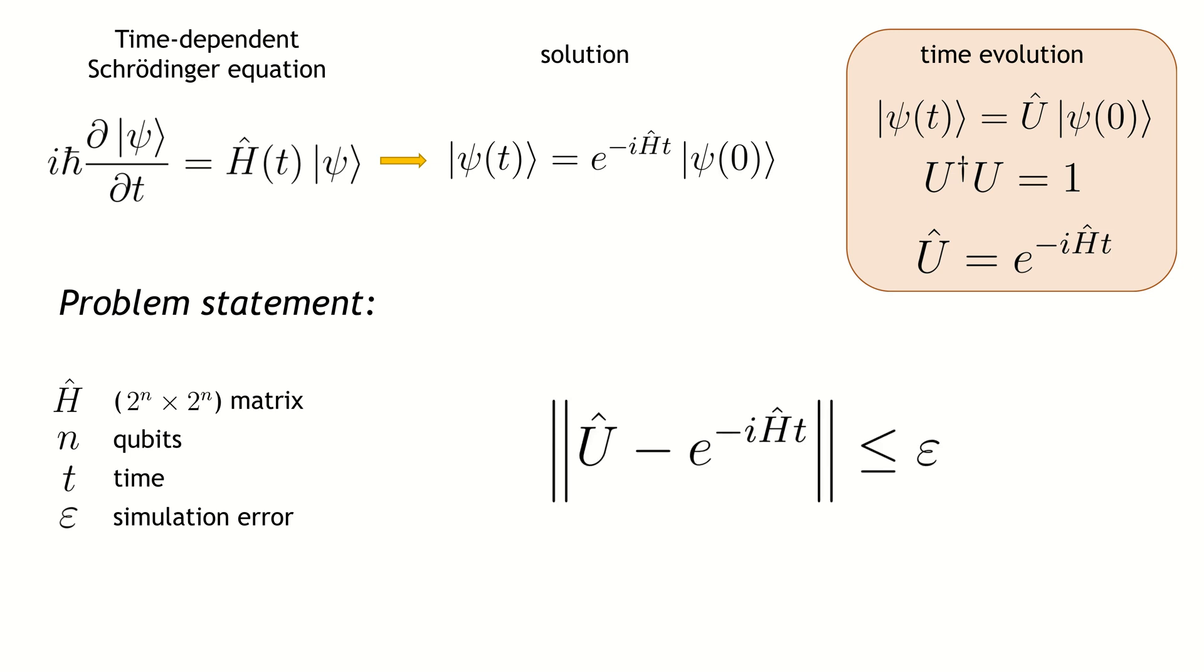the goal is to find a sequence of computational gates that implement time evolution such that the spectral norm of the difference between simulated and the ideal evolution is less than epsilon.